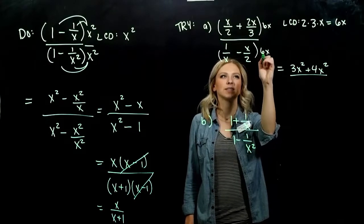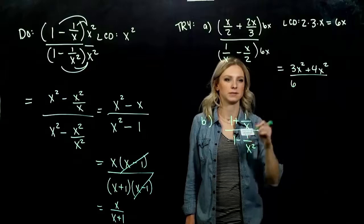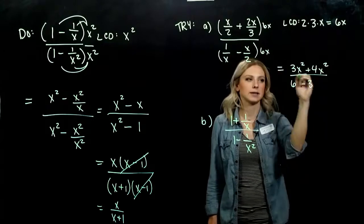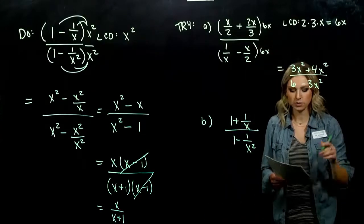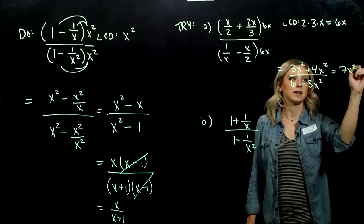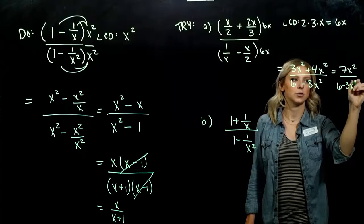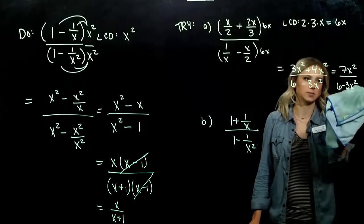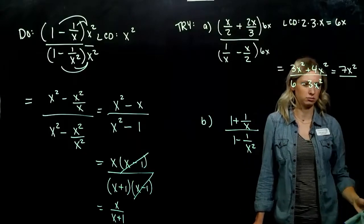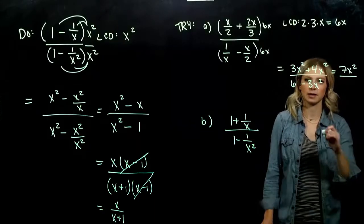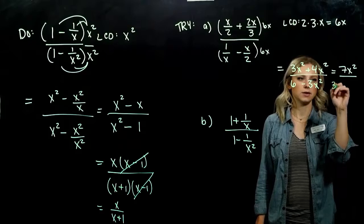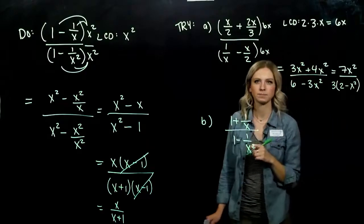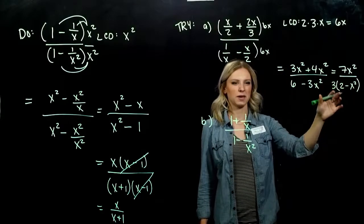Down below: 6x divided by x gives 6, then 6 divided by 2 is 3, and x times x is x squared. Combining the terms on top: we have 3x² plus 4x² which is 7x squared. On the bottom we have 6 minus 3x squared. Can we factor the denominator? We can factor out a 3, leaving 3 times (2 minus x squared). Looking at the factored form, is there anything we can cancel top and bottom? No.